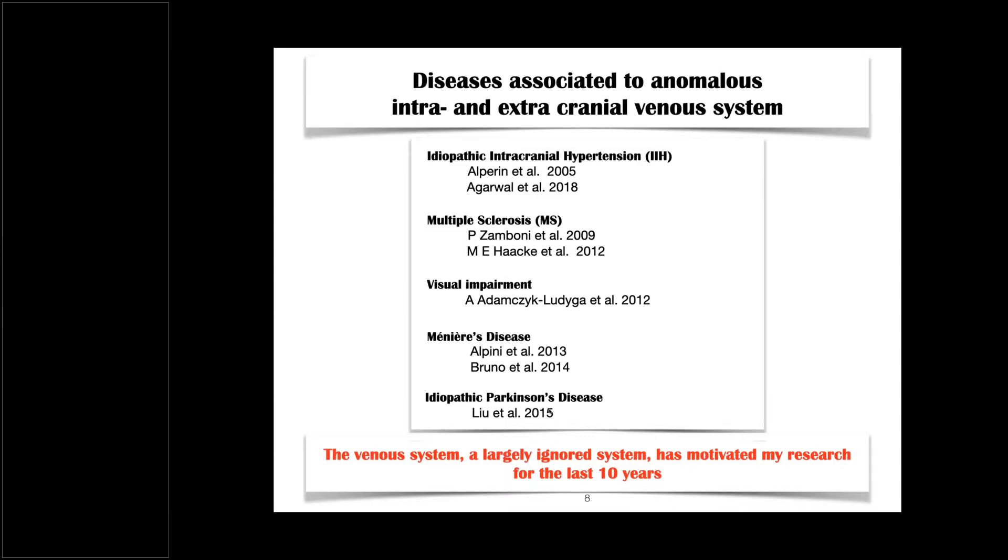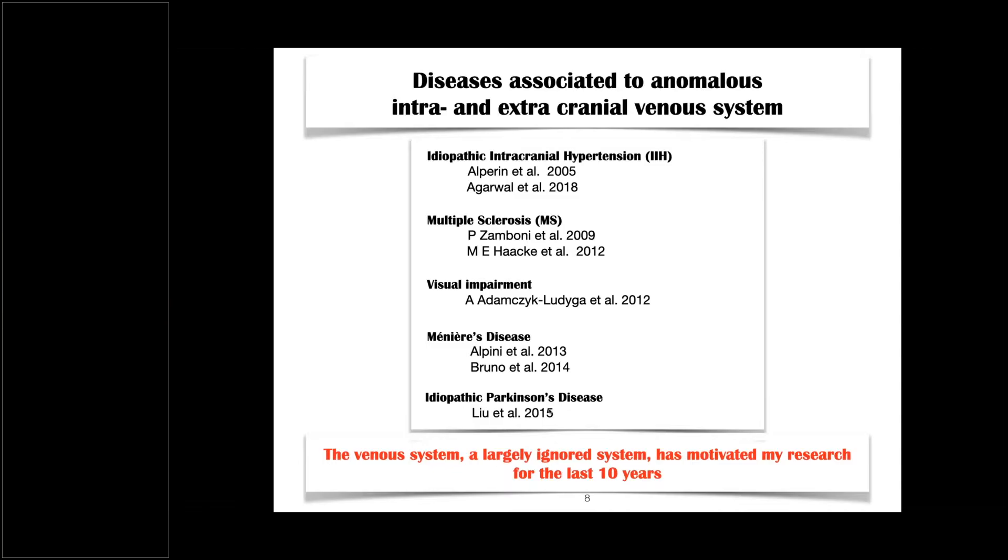Now, as I said earlier, the venous system has largely been ignored. And from the point of view of our research, for the last 10 years, the system has kept us occupied. Concerning fluid system, there is a lot of research going on right now around the world. And I put here four topics with major themes of people working in these areas. And I will not go much into details of this. But I just point out that the last one here, again, the venous system is being allocated an important role in the glymphatic system and the clearance function of the brain.